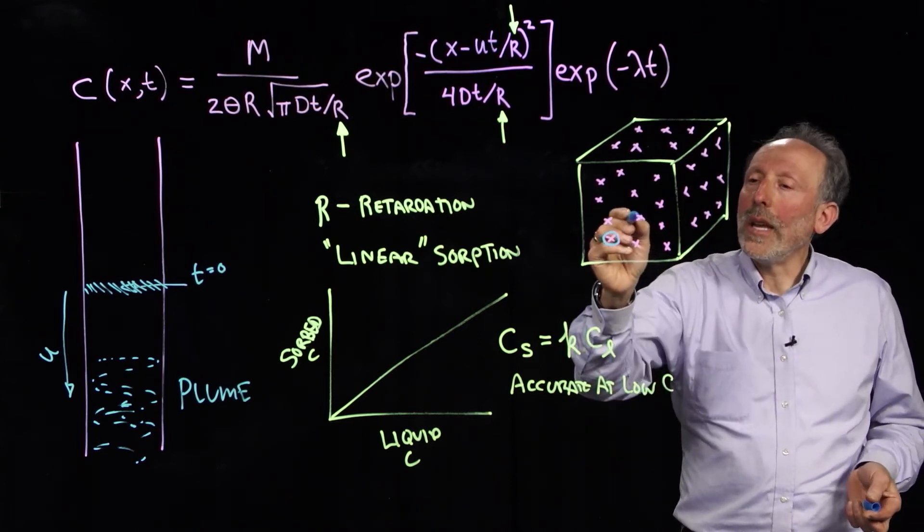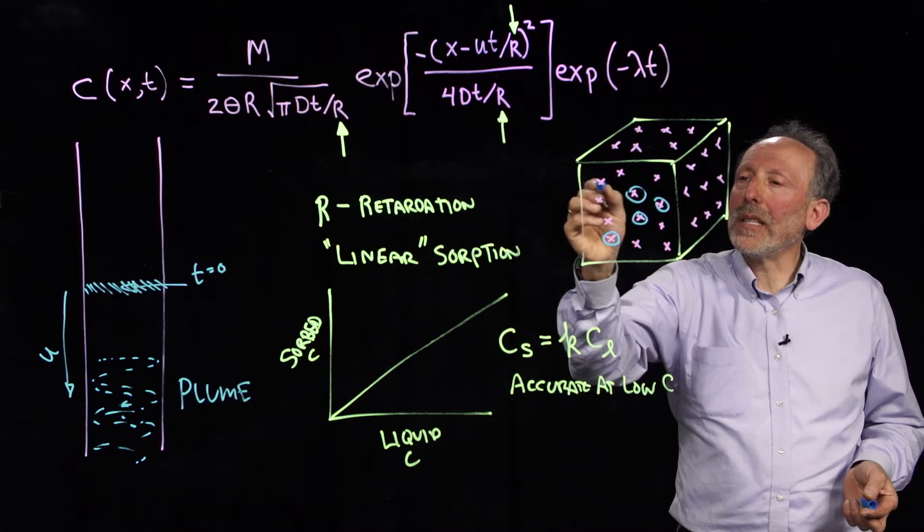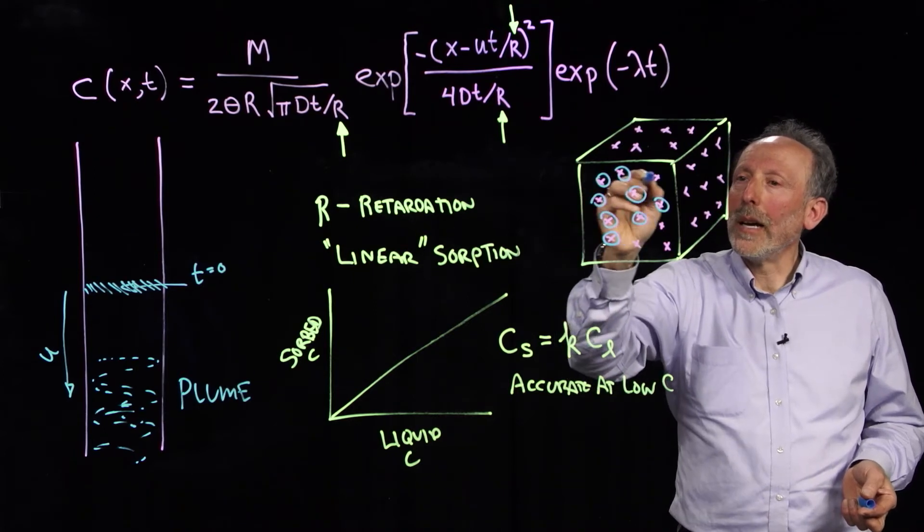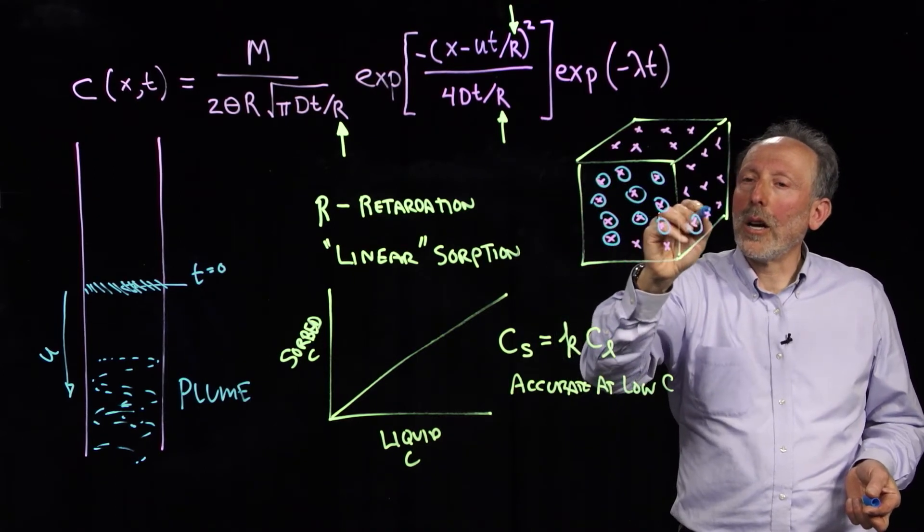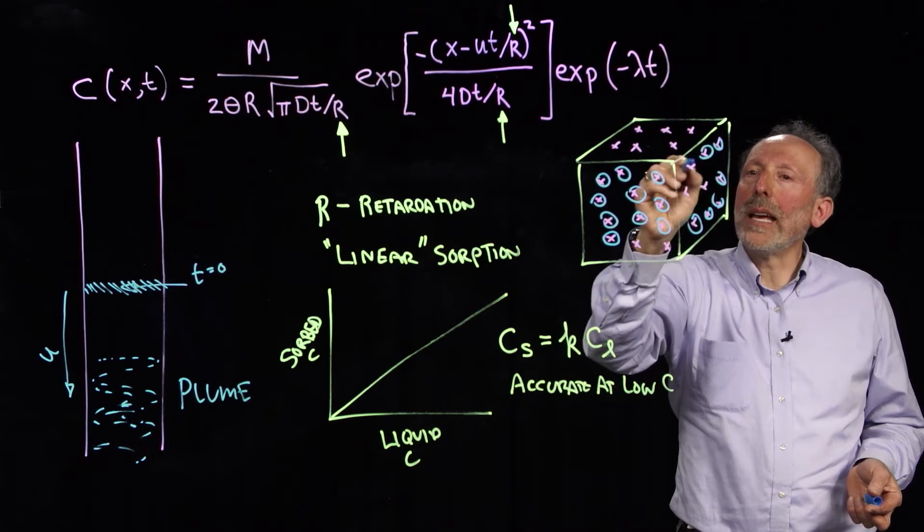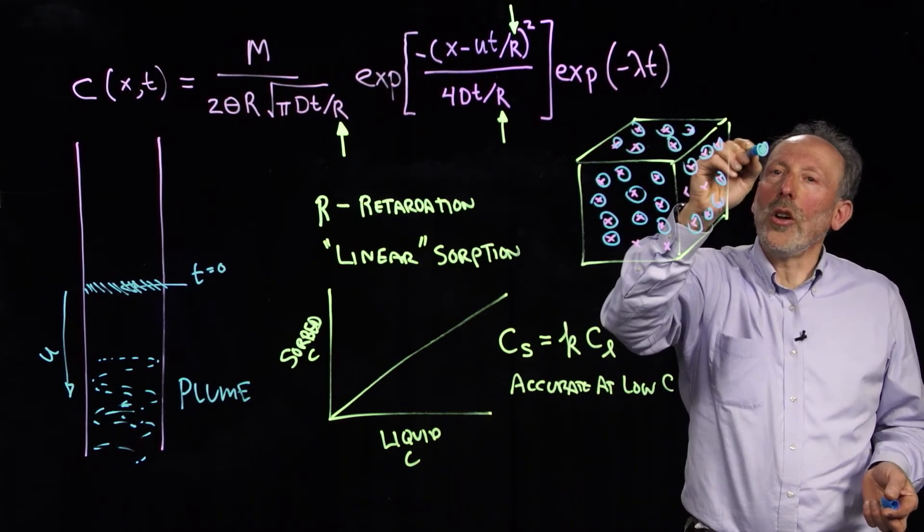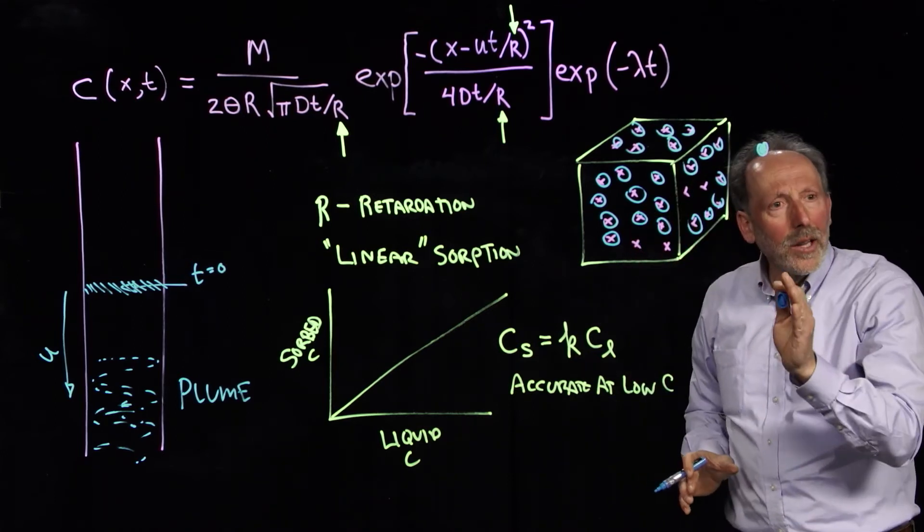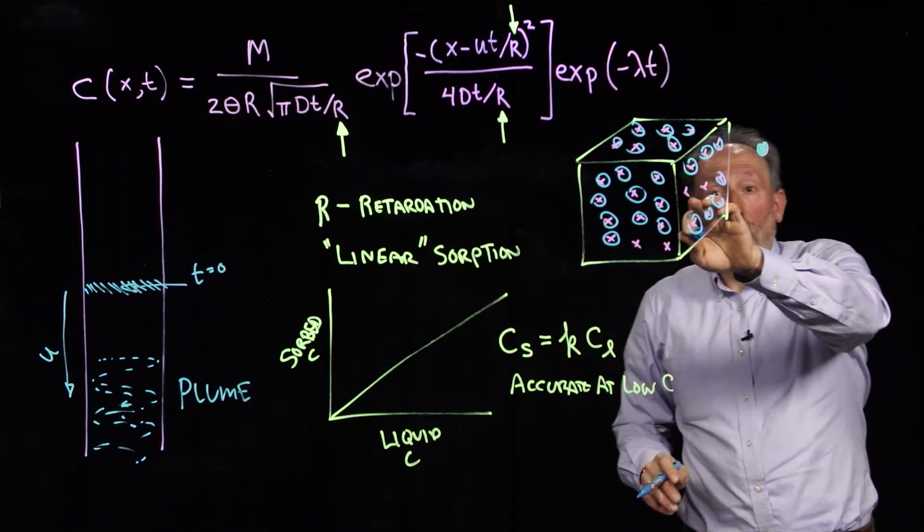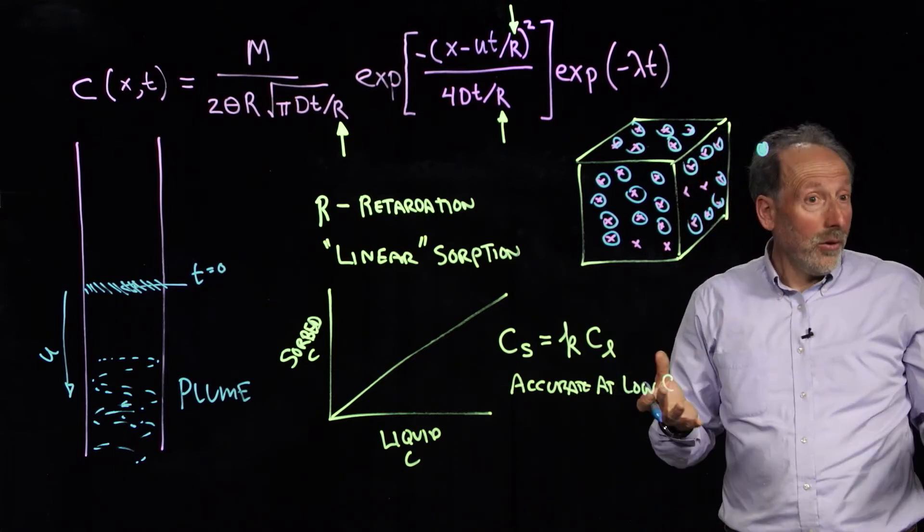On the other hand, if we had many, many, many of these sites occupied with sorbed compounds, then we'd say what is the probability that another solute would have a place to bind? And it becomes very low. So, when all of these are filled up, then you would have no sorption.